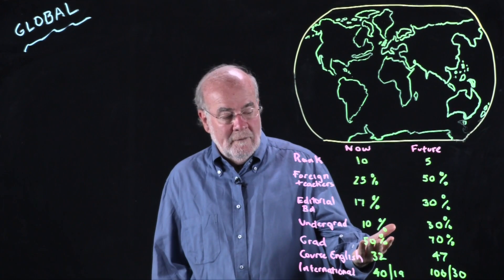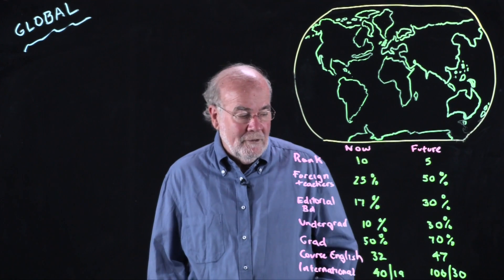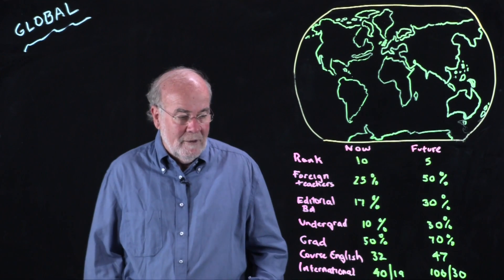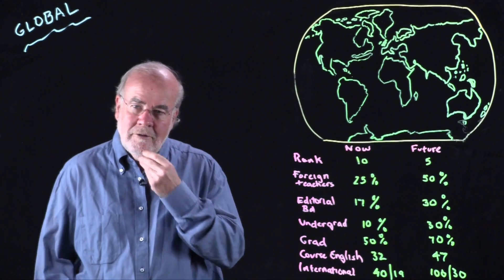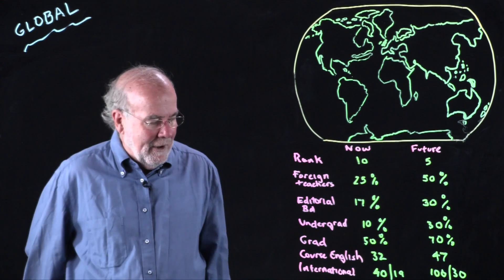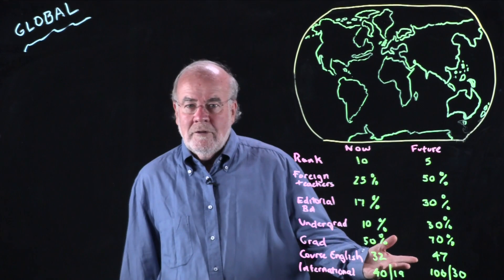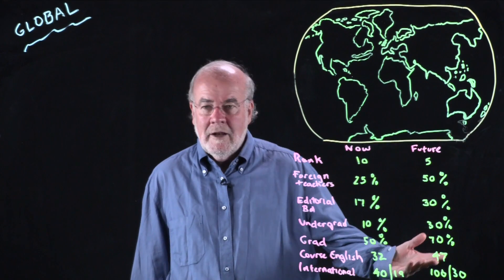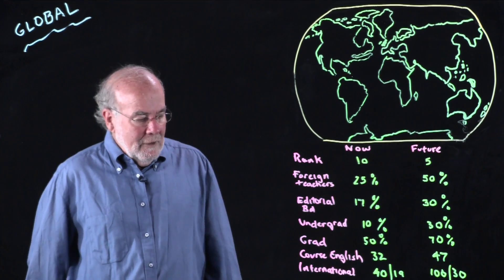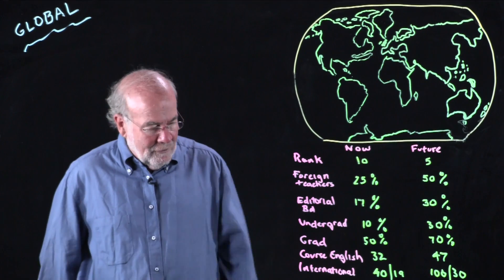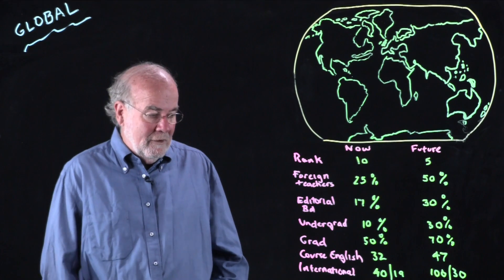You can see their grad population in this particular department is around 50 percent, and they want to get it up to 70 percent. Right now they've got about 32 courses they offer in English, and they want to get that up to 47.